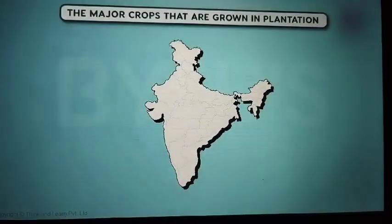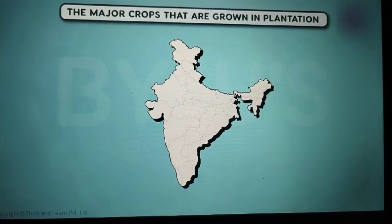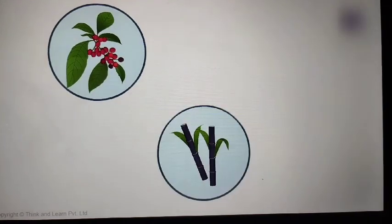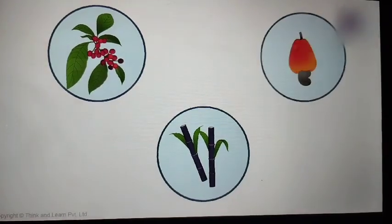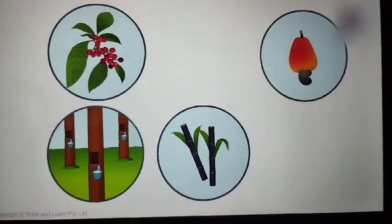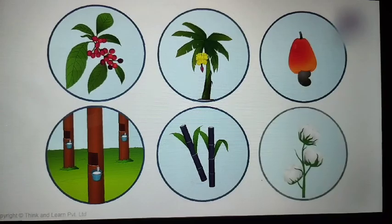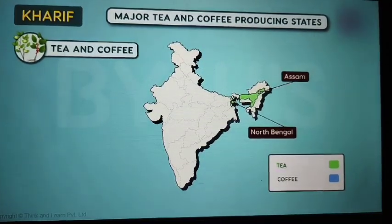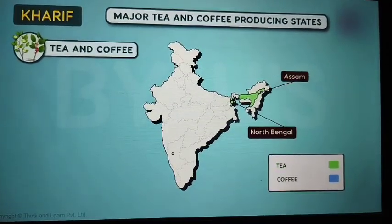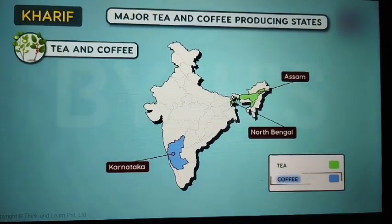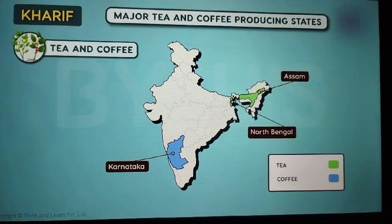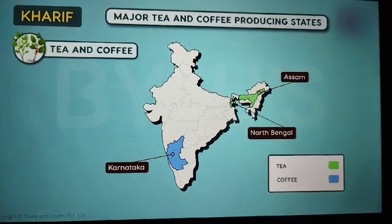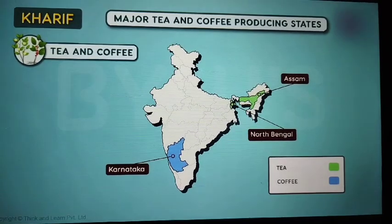The major crops that are grown in plantations are coffee, sugar cane, cashew, rubber, banana and cotton. Tea in Assam and North Bengal, coffee in Karnataka — these are some of the examples of plantation crop cultivation in India.